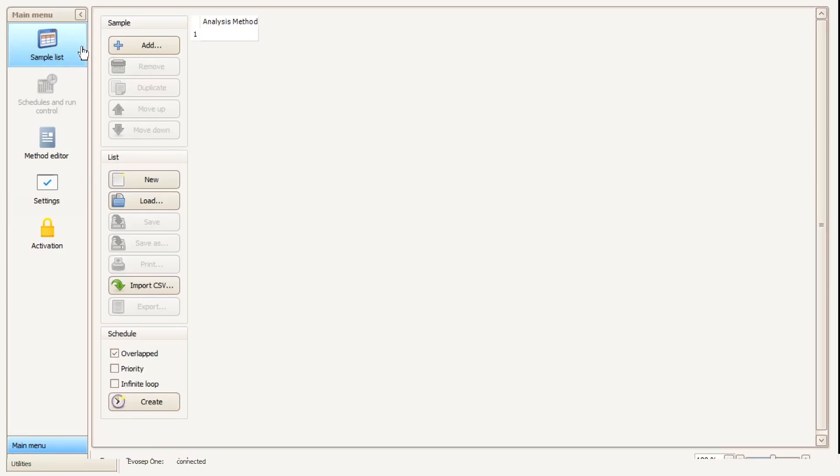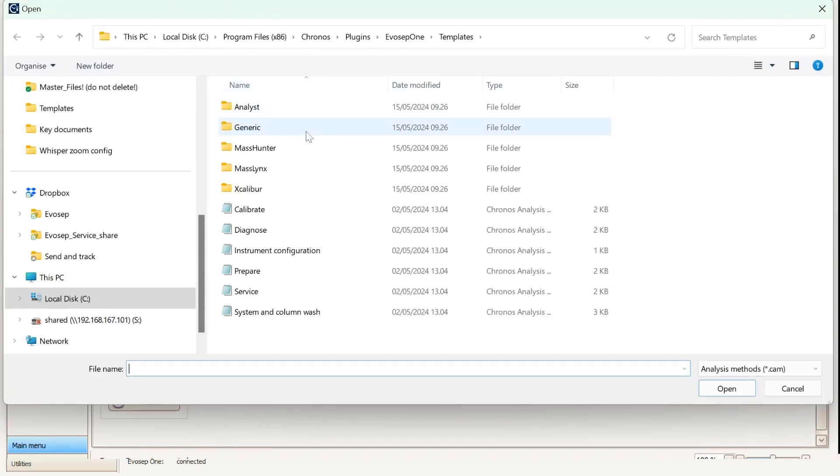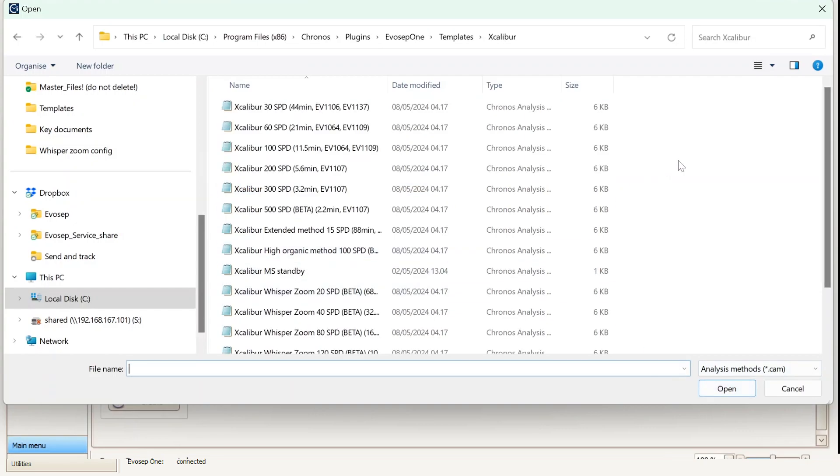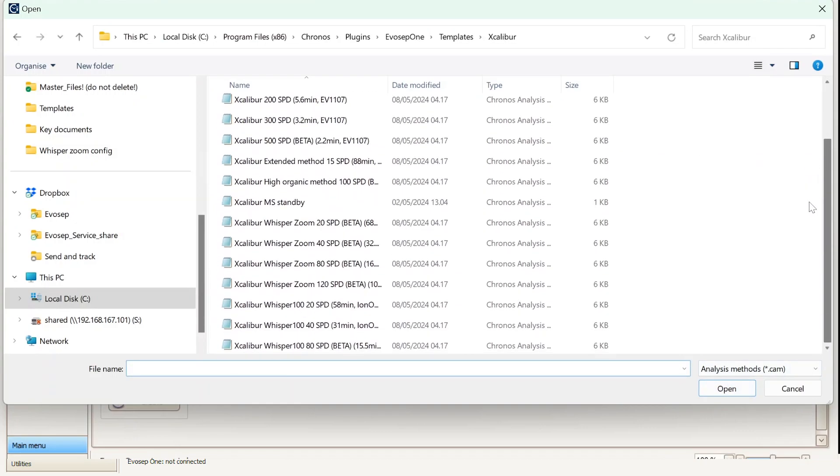I'll just quickly show you where to navigate to find the new WhisperZoom methods. Once again we jump back into Chronos, head back to the sample list, select the three dots representing our method selector, navigate to the relevant folder, and here you'll find your WhisperZoom methods listed at the bottom.